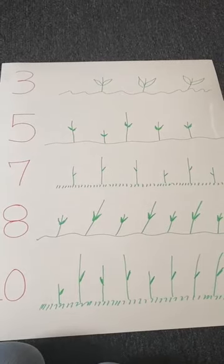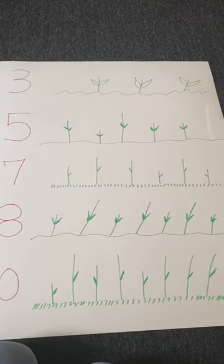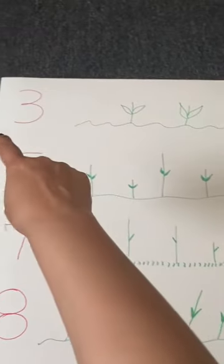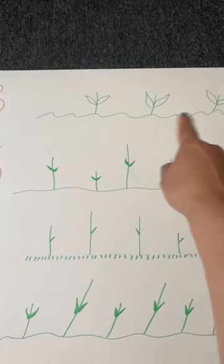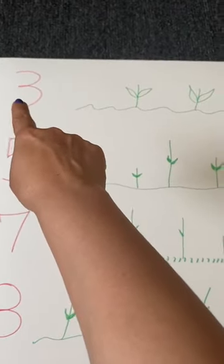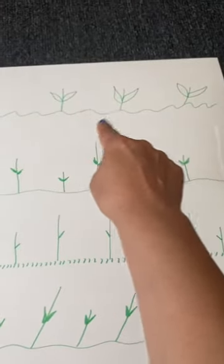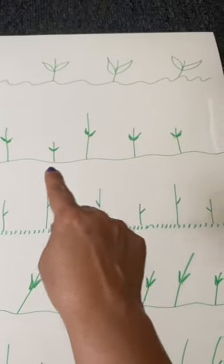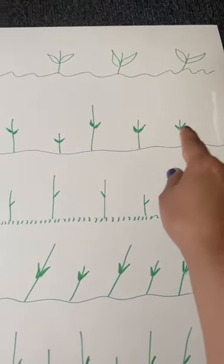You see, I have a number three and I did three flowers. I have a number five and did five stems with leaves. And seven, I did the same thing.